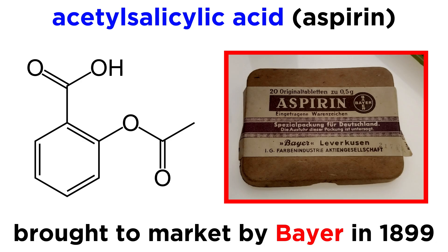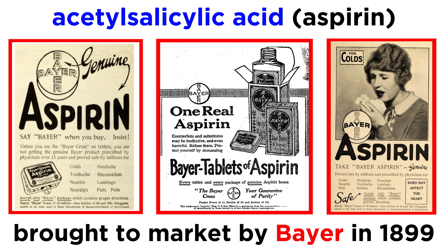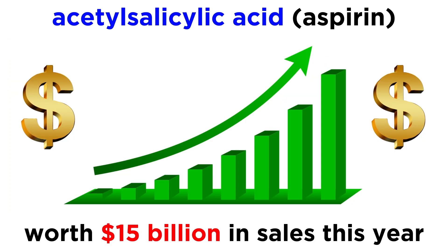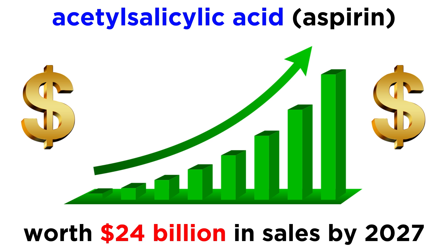Later that century, a fairly young company named Bayer Pharmaceuticals modified the compound to produce acetylsalicylic acid. This is what we commonly refer to as aspirin, which was first brought to market in 1899. Bayer was incredibly successful with the product, and today the market for aspirin and similar drugs is worth roughly 15 billion in sales, expected to grow to 24 billion by 2027.